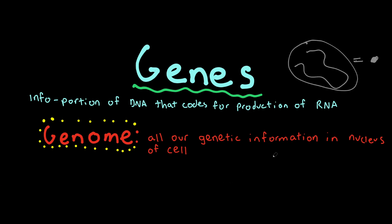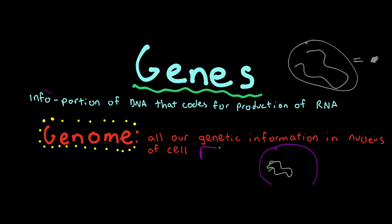Now let's talk about a genome, which is all of our genetic information in the nucleus of a cell — all the information we need for our body to function. For example, liver cells and brain cells have the same genetic information. The liver cells have information about brain cells and vice versa, but they won't use that information since it is not needed. The liver will use its genetic information for the functions of the liver, while the brain will use the brain-related information from the genome to function.